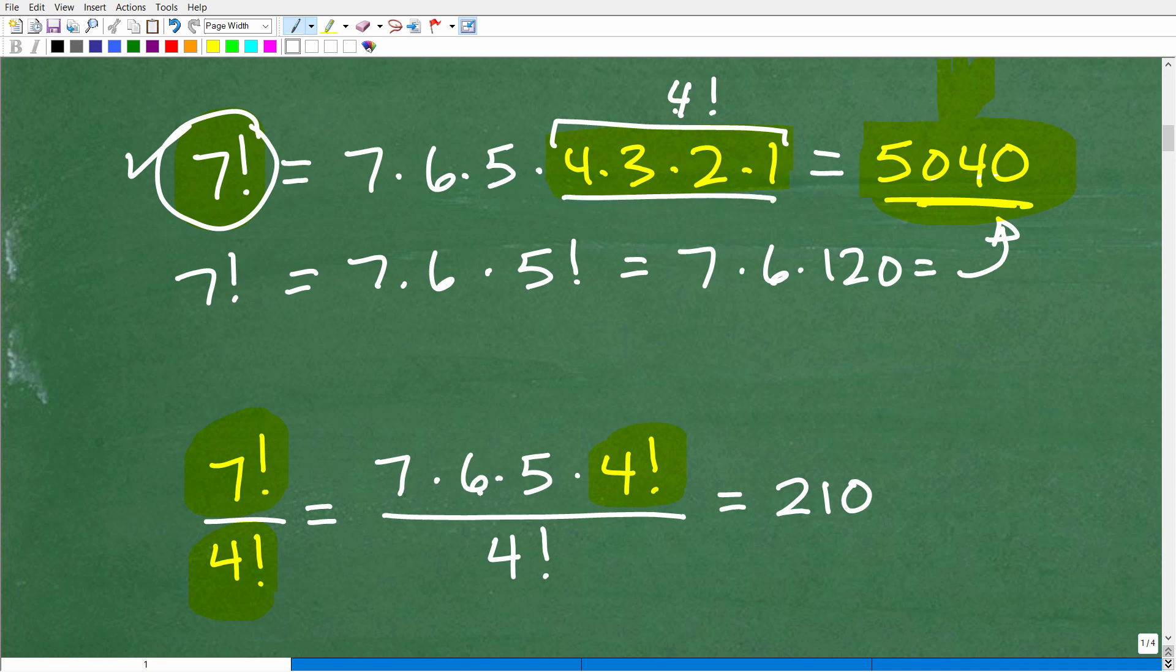So just to be extra clear about that, so 7 factorial, 7 times 6 times 5 times 4 factorial divided by 4 factorial. I have 4 factorial and 4 factorial. These are common factors. So, in other words, the whole point I'm trying to make here is you can cross-cancel these. And now the answer to 7 factorial divided by 4 factorial is simply 7 times 6 times 5, which is 210.